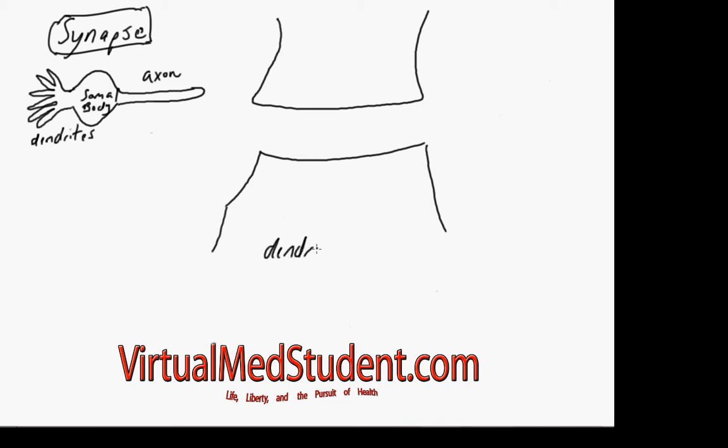This is the dendrite of the cell that's receiving the information, also known as the postsynaptic neuron. And this is the axon of the neuron that's sending the information, also known as the presynaptic neuron.